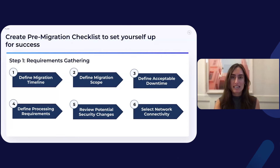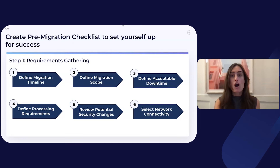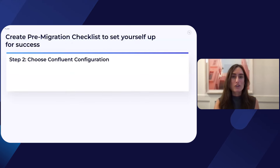The final requirement you'll want to gather is the network connectivity you'd like to use to connect to the Confluent Cloud clusters. Confluent Cloud can support public and private internet connectivity on all cloud service providers. Be sure to consult your networking team to affirm that the selected networking type aligns with your organization's networking and security policies. With all your requirements decided and documented, you are ready to move on to the next step of the checklist: choosing your Confluent configuration.